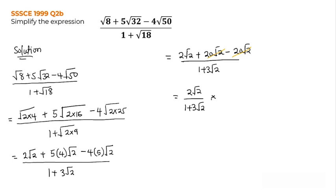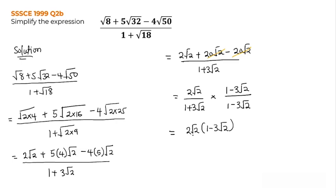The conjugate of 1 plus 3 root 2 is 1 minus 3 root 2 — we only change the sign. So we have 2 root 2 over 1 plus 3 root 2, multiplied by 1 minus 3 root 2 over 1 minus 3 root 2.